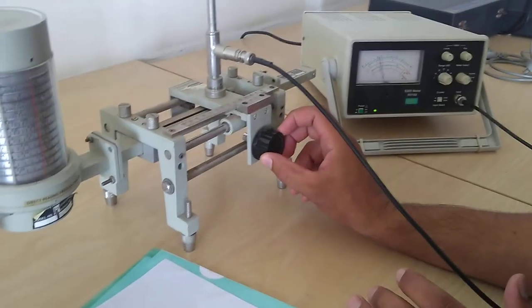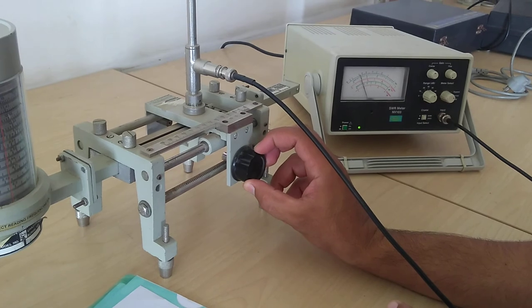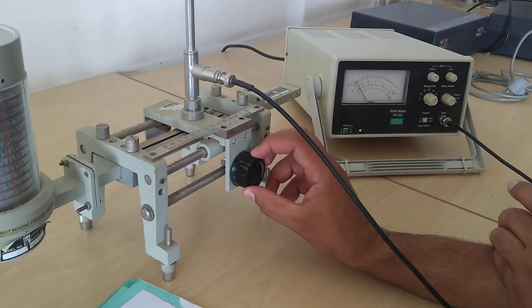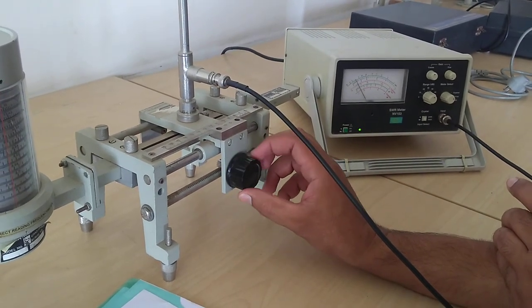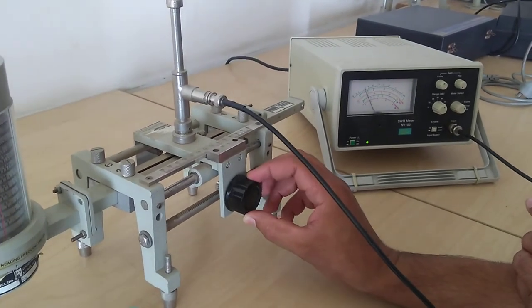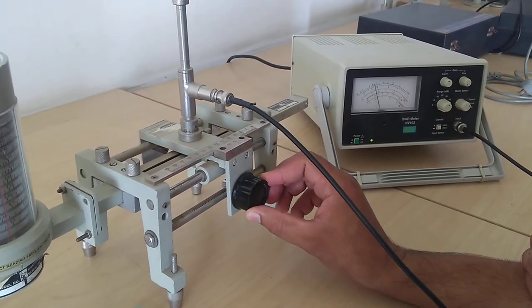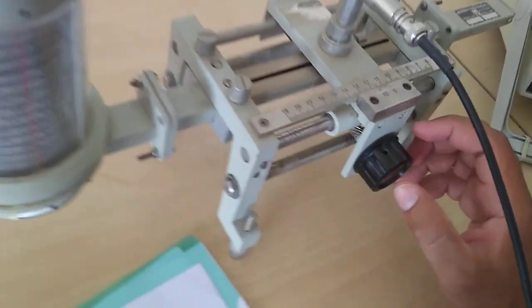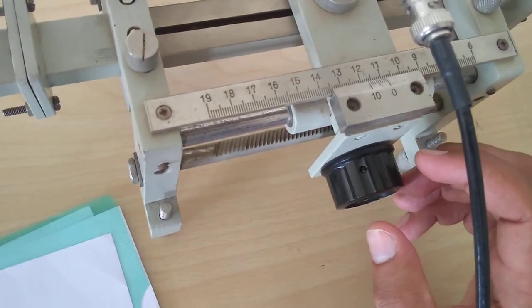Then I continue rotating. The signal goes to minima, then to maximum, then to minima again. I note the second maxima point at around 11.2 millimeters.